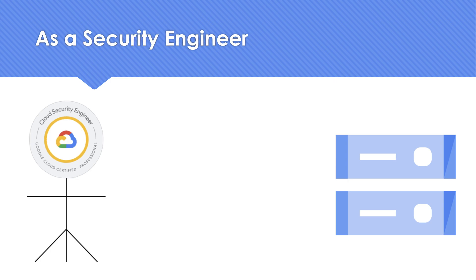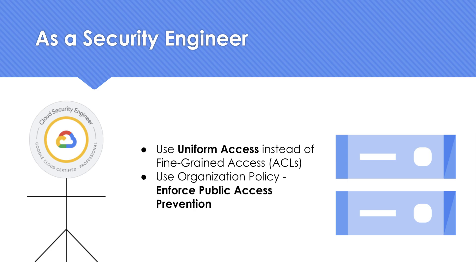As a security engineer, there are two important best practices. First, always prefer to go with uniform access — never use fine-grained access or access control lists, because this is legacy. When you use uniform access, it is completely controlled using Cloud IAM, which is always a better choice. If you have an object that needs to be exposed, create a separate bucket and grant access at the bucket level — note that buckets are not charged, but the objects inside are. Second, turn on the org policy that enforces public access prevention, so that even someone with editor, owner, or storage admin role cannot accidentally make a bucket public.